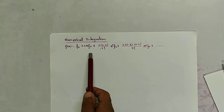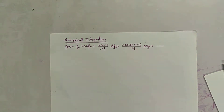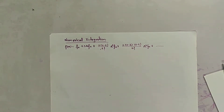We use the Newton forward interpolating polynomial. In Boole's method, the value of n is 4. We have derived the expression for Newton's quotes method in which we used n equals to 1, n equals to 2, n equals to 3, and when n equals to 4 it is called Boole's method or Boole's rule.